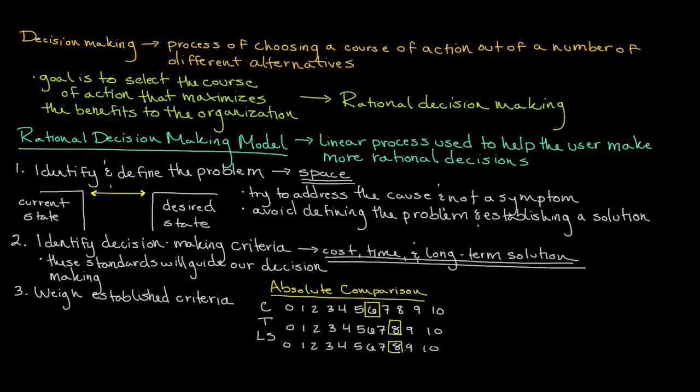Another method of weighing criteria is to use relative comparisons. Relative comparisons involve actually comparing each criteria with another. So by rating each criteria against one another, we obtain an understanding of the criteria that are most important to us. This can be useful when attempting to weigh criteria that receive similar ratings under an absolute comparison.